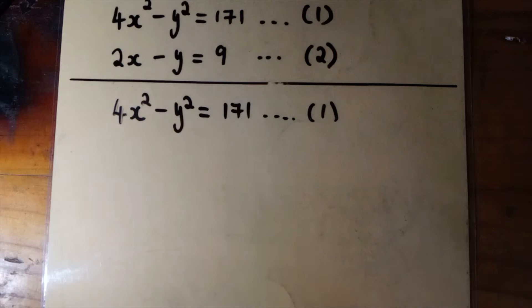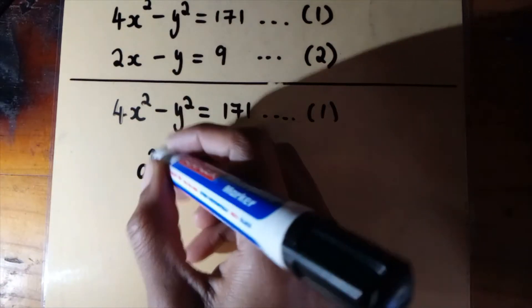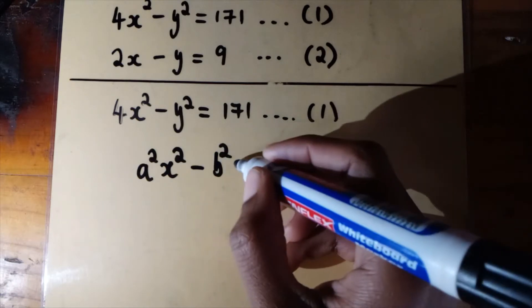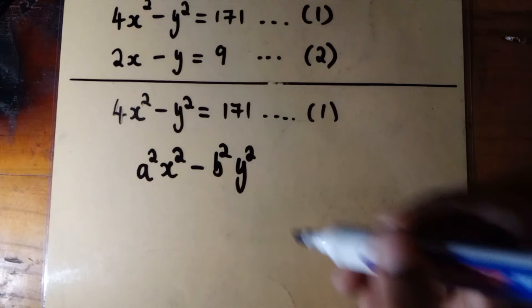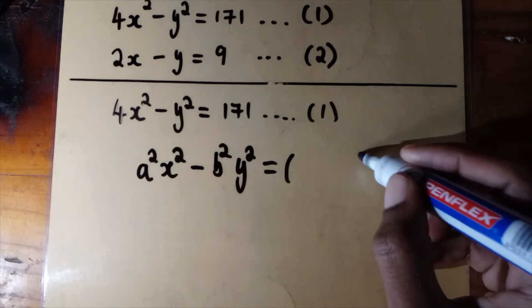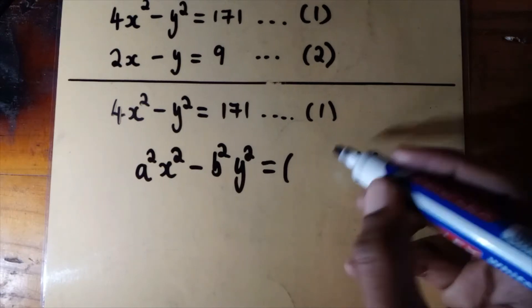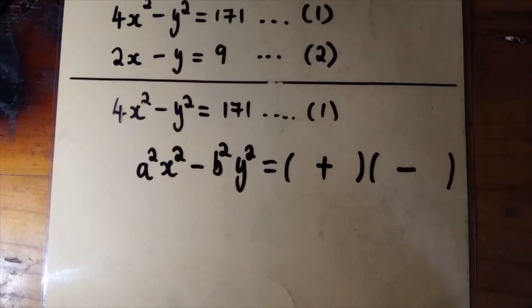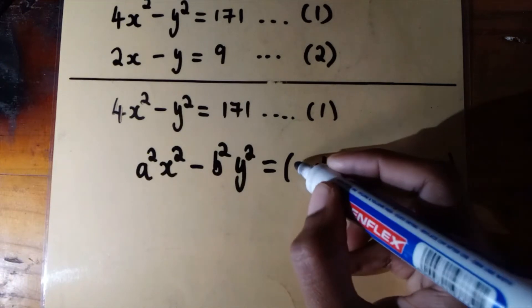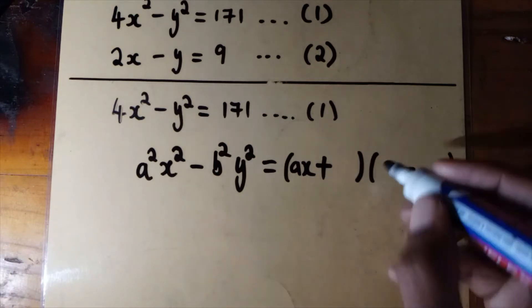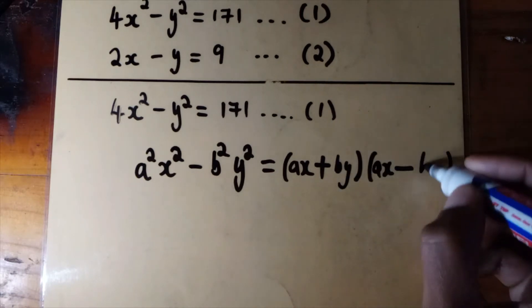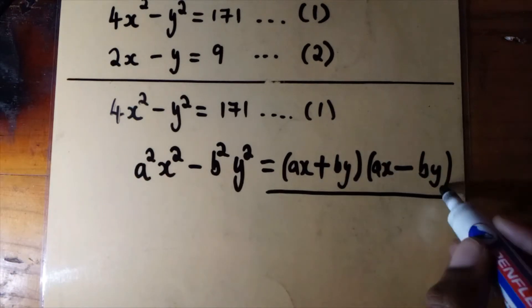We can factorize the left hand side using a general formula. If we have a squared x squared minus b squared y squared — a difference of two squares — we open two brackets, put a plus in the middle of the first bracket and a minus in the middle of the second. The first term in both brackets is ax, and the second term in both brackets is by, giving us (ax + by)(ax - by).